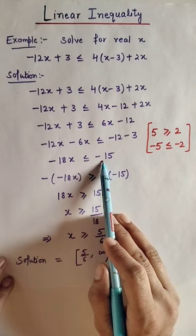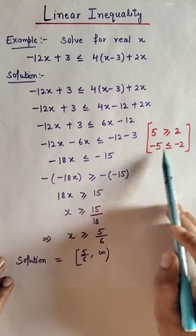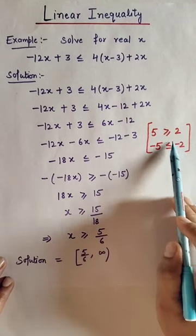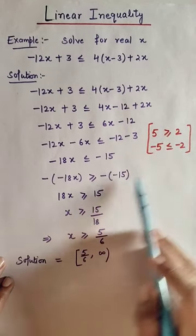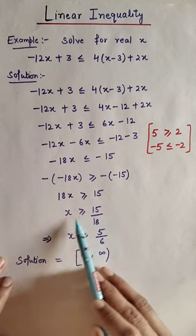When we multiply both sides by negative, we must change the inequality sign. For example, if -5 is greater than or equal to -2, multiplying by negative changes it. Now this will be 18x greater than or equal to 15.